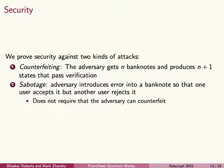Finally, I'll talk about the security proof. There are actually two kinds of attacks that we want to rule out: counterfeiting and sabotage. We're already familiar with counterfeiting. In a sabotage attack, the adversary modifies a banknote so that one verifier accepts it, but then another verifier rejects it. This is possible in franchised verification because every verifier gets a different key. It's a problem in money schemes because if you accept a banknote from someone else, you want to have confidence that you can then spend it — this is how money retains its value.